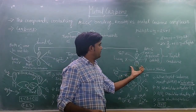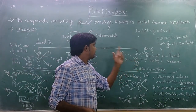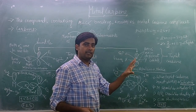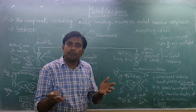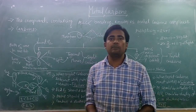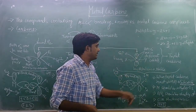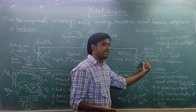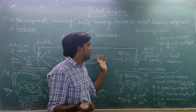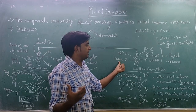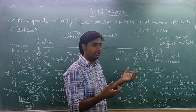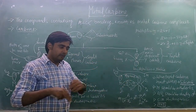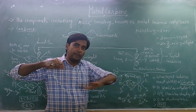Now talking about triplet carbene: there are two substituents available, and both electrons are in different orbitals. When an orbital doesn't have a lone pair, it can't act as a sigma bond. So there are only two sigma bonds, giving sp hybridization. When sp hybridization, the geometry should be linear. So triplet carbene has linear geometry, and the p orbitals are perpendicular to the linear triplet carbene.